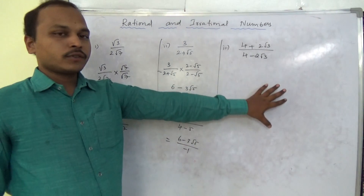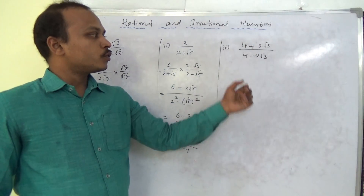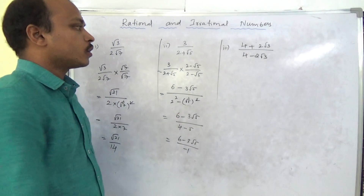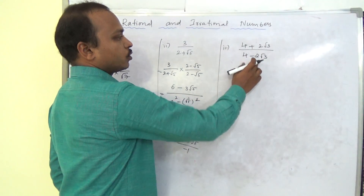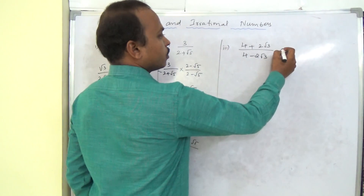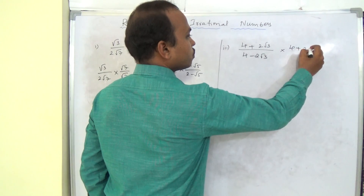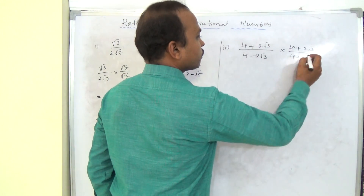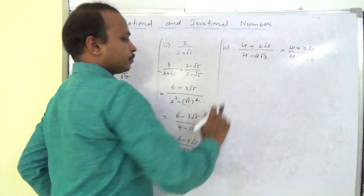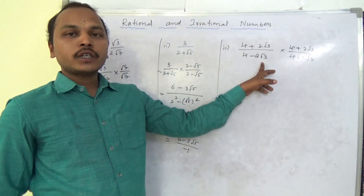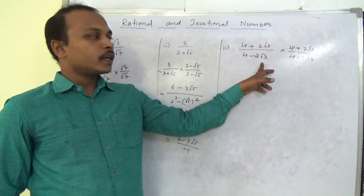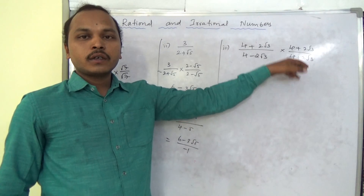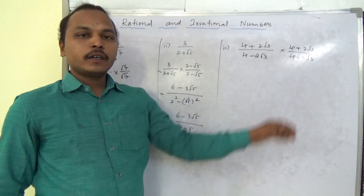Now the next question: 4 plus 2√3 by 4 minus 2√3. The denominator is 4 minus 2√3, so the rationalizing factor is 4 plus 2√3. We multiply and divide by the same rationalizing factor 4 plus 2√3 by 4 plus 2√3.